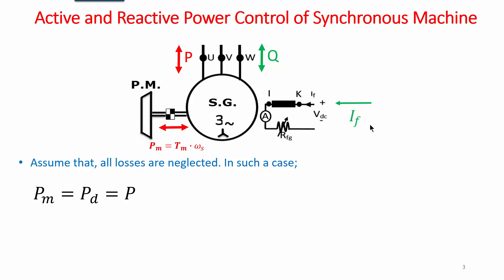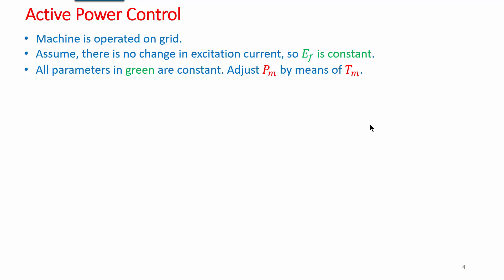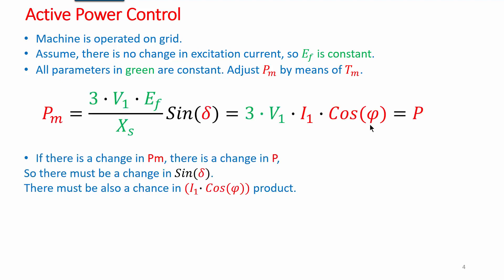With losses neglected, applied mechanical power equals developed (induced) power in the armature, which also equals terminal power. Applied mechanical input power equals 3 times voltage EF sin δ over Xs, and it is also equal to 3 times voltage, current, and power factor. For active power control, assume the machine operates as a generator on an infinite bus with no excitation current change, so the induced EMF is constant. We adjust applied mechanical power by means of torque — changing shaft power changes induced power and thus the electric power at the terminal.